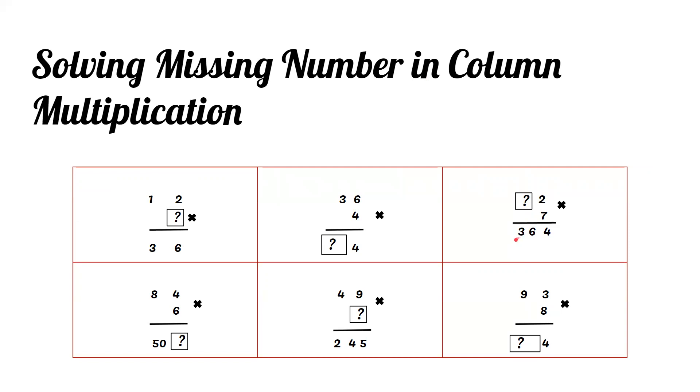36 minus 1 is 35. 7 times 1 is 7, 7 times 2 is 14, 7 times 3 is 21, 7 times 4 is 28, 7 times 5 equals 35. Try these 3 problems.